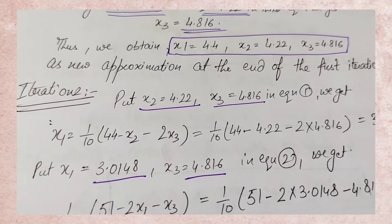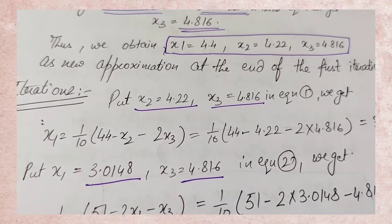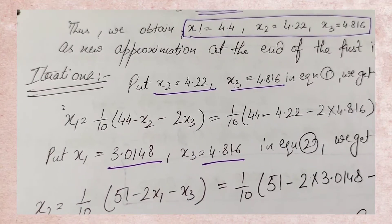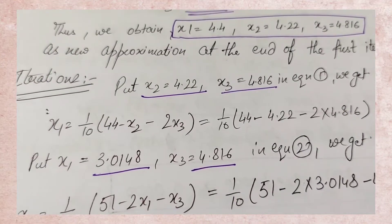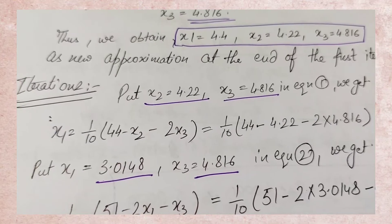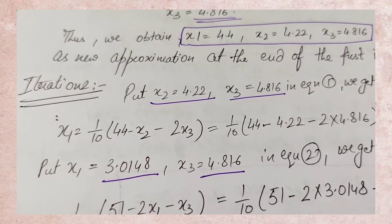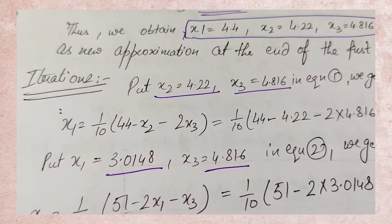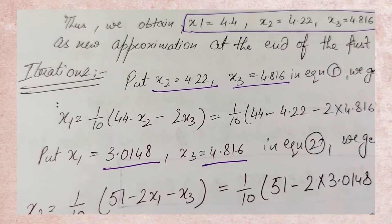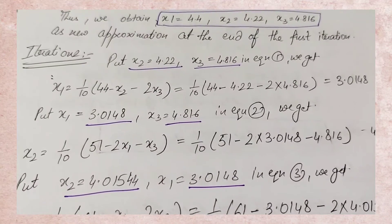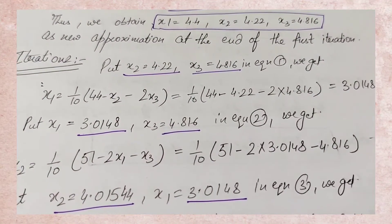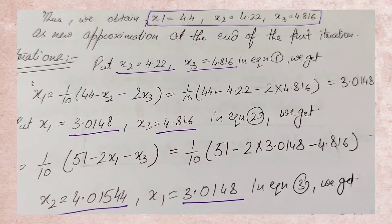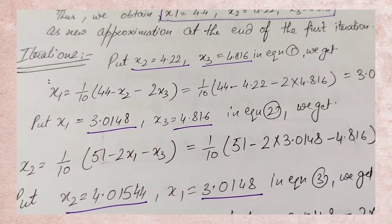Now iteration 2 begins. For the succeeding iteration, use the previously obtained values as the new initial values. Take the same equations but now with updated values. The order matters — don't mix up: find x1 first, then x2, then x3. In x1's equation, put the previous x2 and x3 values: x1 = (1/10)(44 − x2 − 2x3). A new value for x1 is obtained. Per Gauss-Seidel's rule, the newly obtained value is carried forward — don't carry the old x1 anymore. x1 now gives 3.0148.